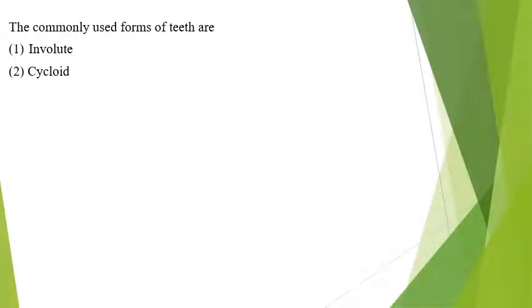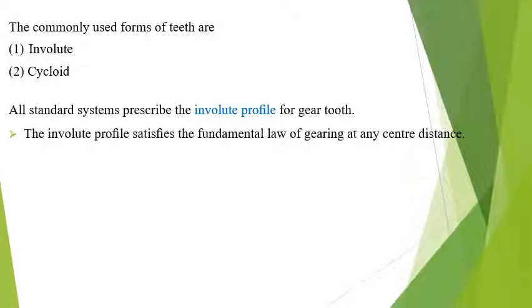The commonly used forms of teeth for gears are the involute profile and the cycloidal profile. All standard systems now prescribe the involute profile for the gear tooth, because the involute profile satisfies the fundamental law of gearing.